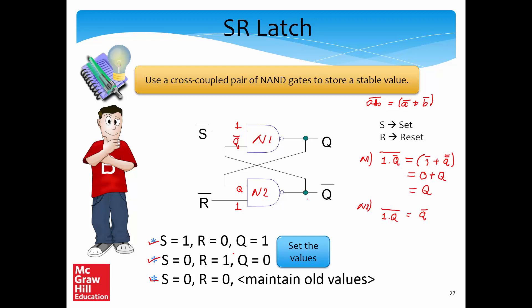This is a fantastic idea. The latch works as follows: we have a way of setting the value (Q to 1), a way of resetting the value (Q to 0), and a way of maintaining the value — whatever is in the latch remains — by setting both S=0 and R=0. When both S and R are grounded, the latch will maintain its value essentially forever, which is exactly what we wanted.